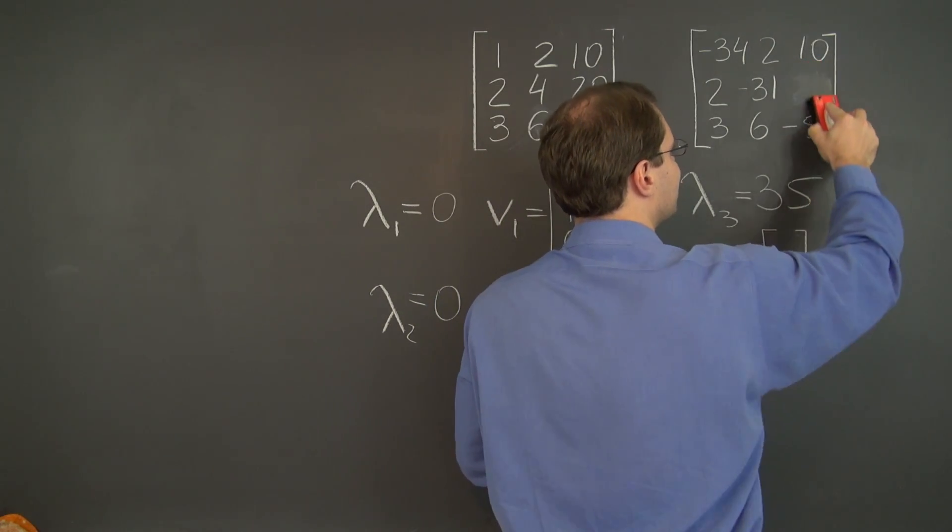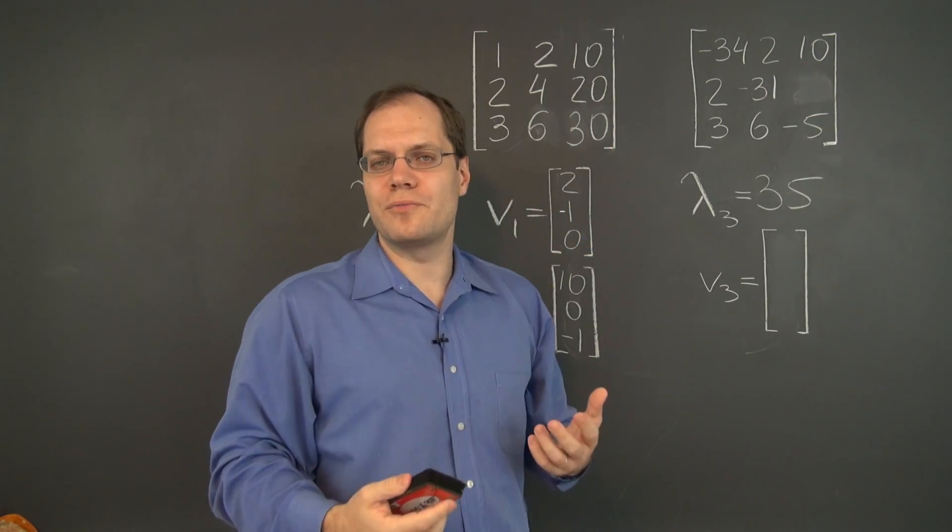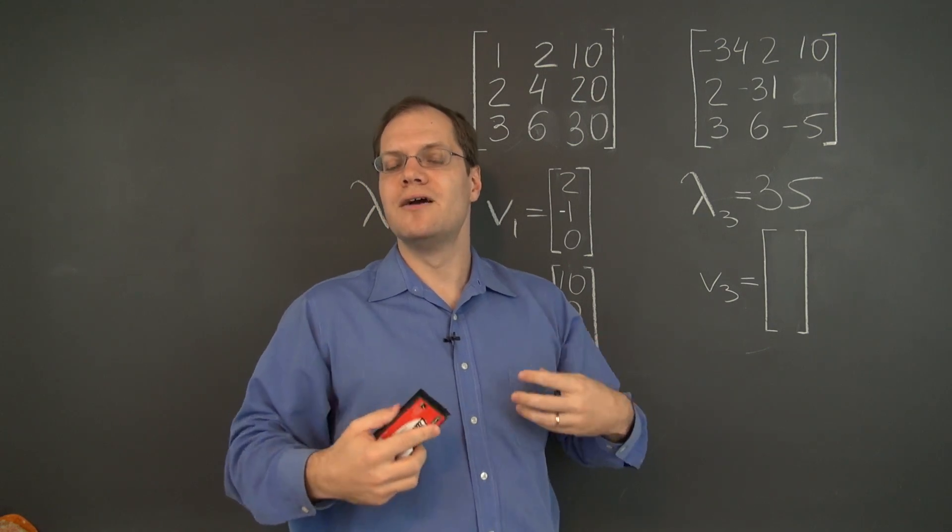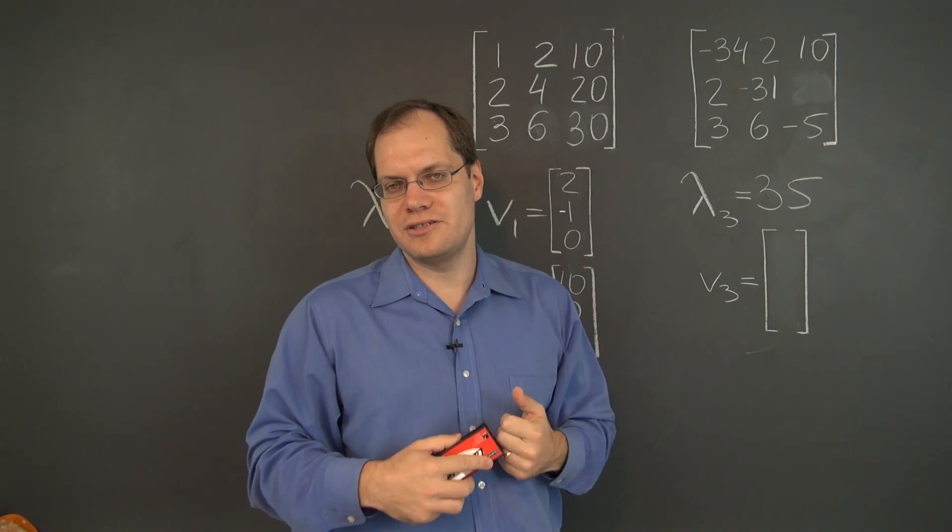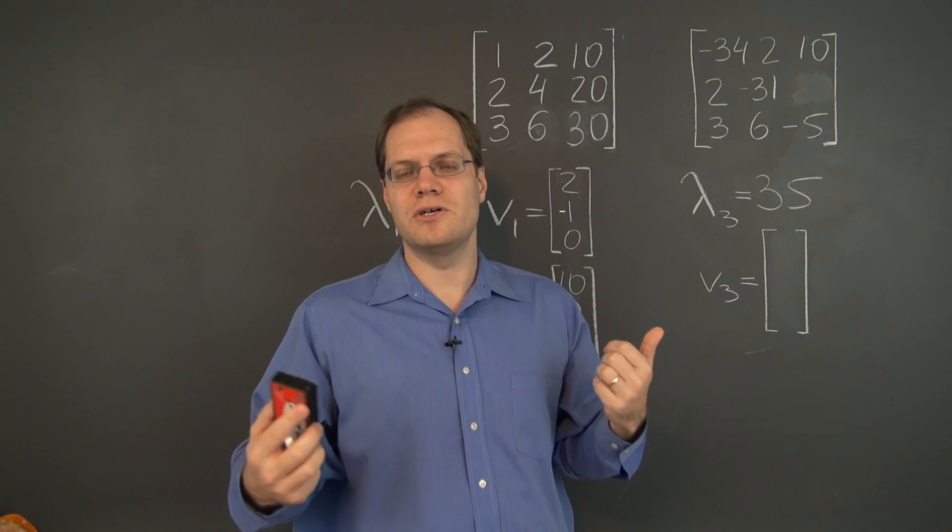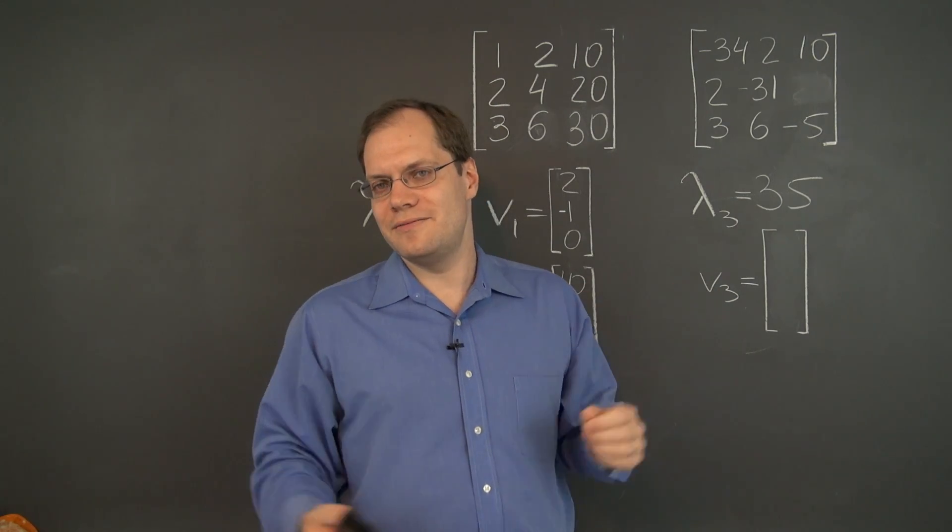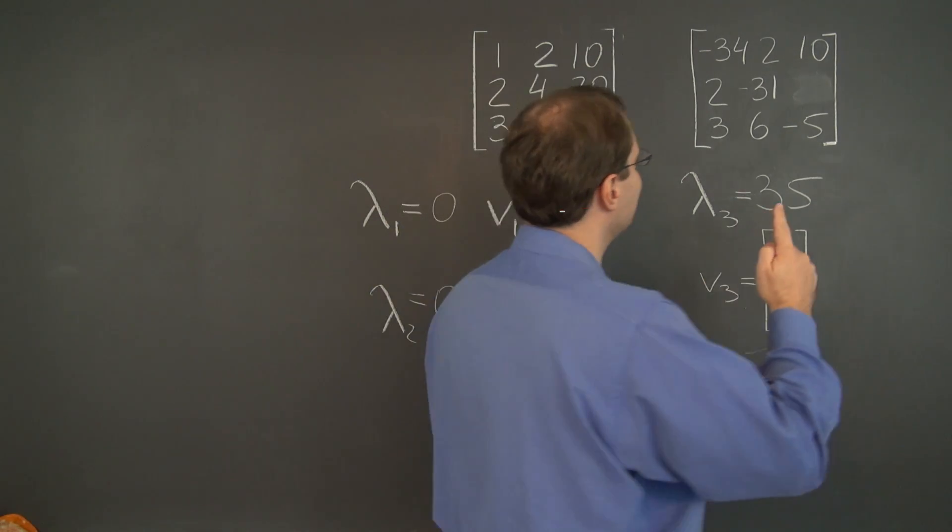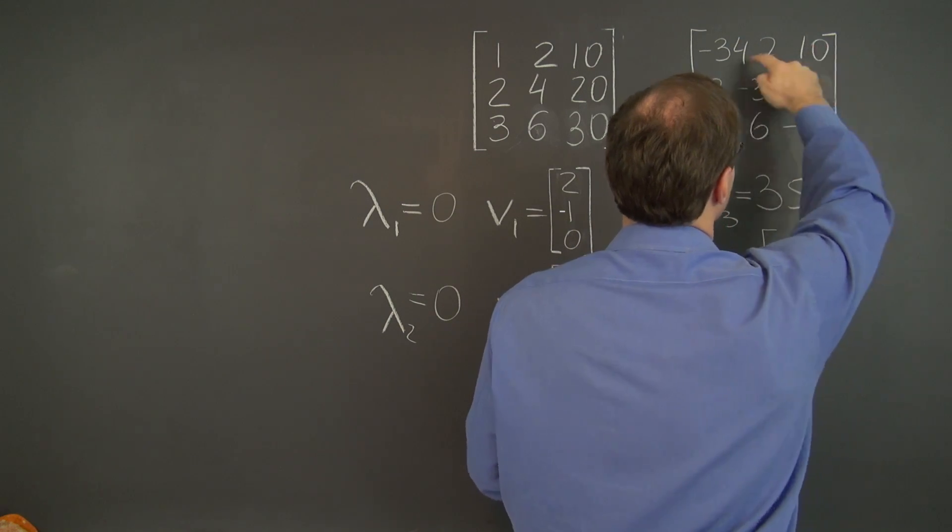Remember we're not after the classical row reduced echelon form here. We're just after performing enough row operations, which don't change the null space no matter what you do, until we see the null space. All right, I forgot what we did. 2 of this from this.